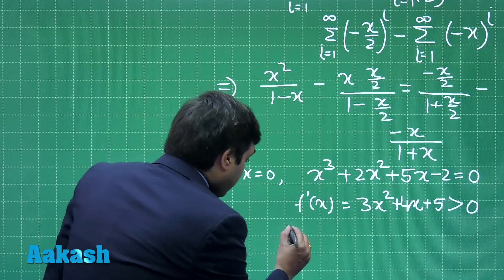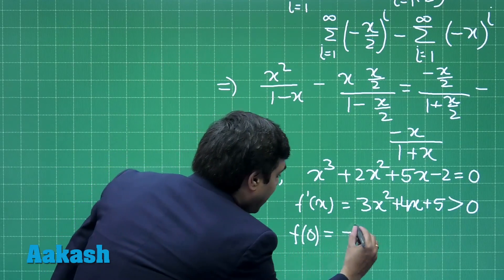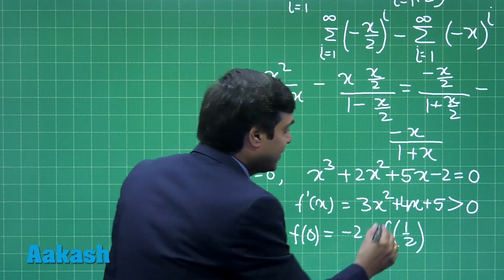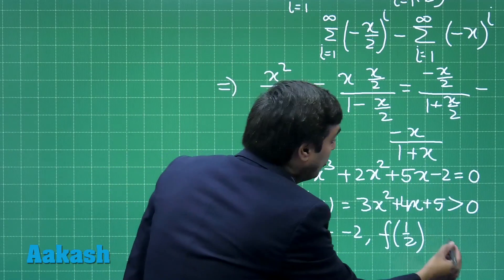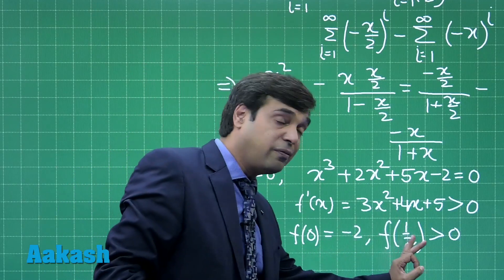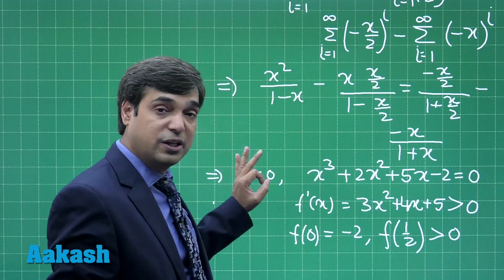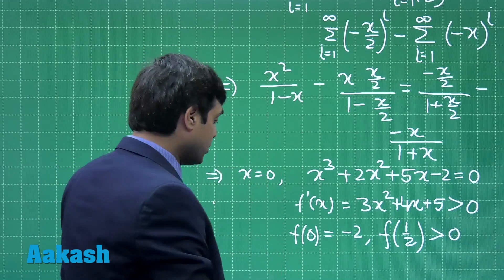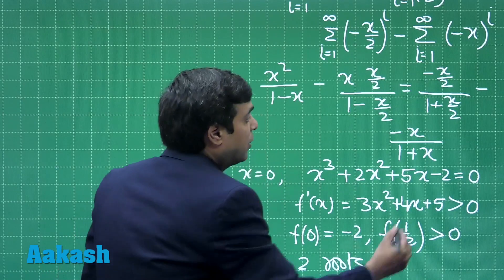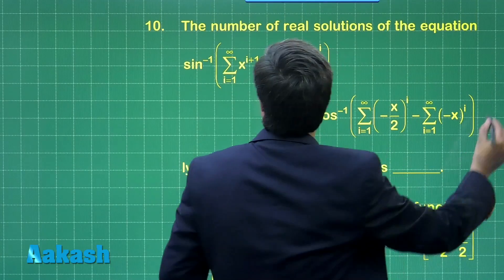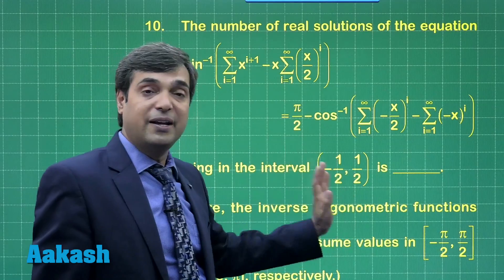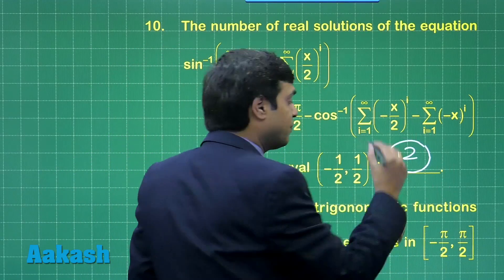Now, we can see that f(0) is minus 2, while f of half on substituting x equals half we can see this is 5 by 2 plus something minus 2, meaning it is positive. So, one root lies in the interval 0 to half, other root is x equals 0. So, there exist 2 real roots of this one. Looking at the question part which says the number of real solutions of the equation lying in the interval minus half to half is, so correct answer is 2.